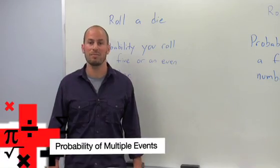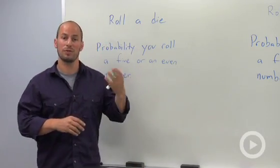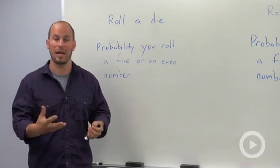When we're dealing with the probability of multiple events, what we have to look at is if our events are mutually exclusive, meaning there's no overlap, or if they're inclusive, meaning there is overlap.